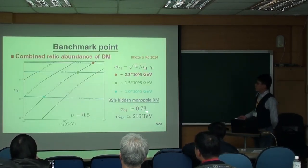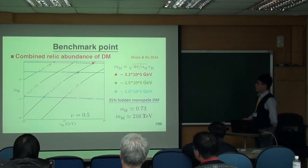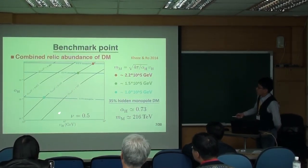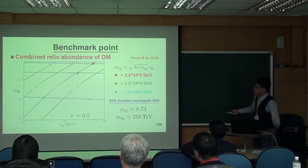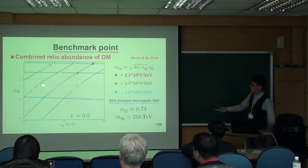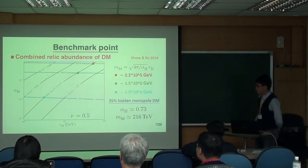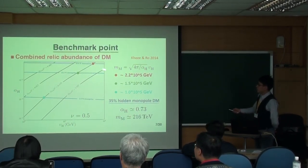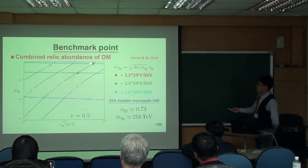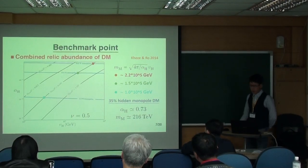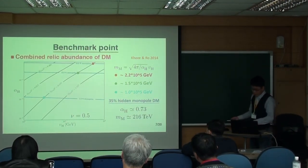Here I want to talk about the benchmark point in our study. So this is a plot done by these people. The vertical axis is alpha_h, and the x-axis is the VEV. For example, this red point corresponds to the case where the monopole contributes to about 75% of the total dark matter density. Because actually in this model, the gauge boson, hidden gauge boson, can also be a dark matter candidate.